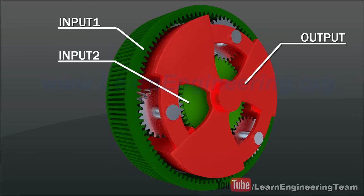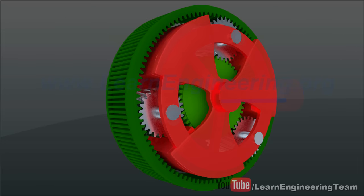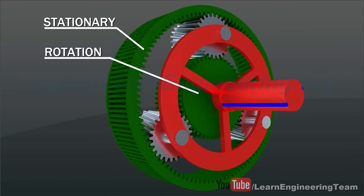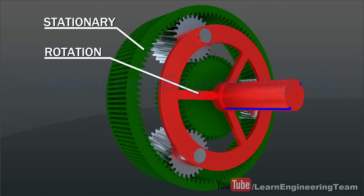Now let's see what happens to the output speed when we apply different speeds to the inputs. Here the ring gear is stationary and rotation is given exclusively to the sun gear. This will cause the carrier to spin as you can see here.